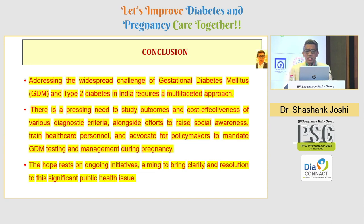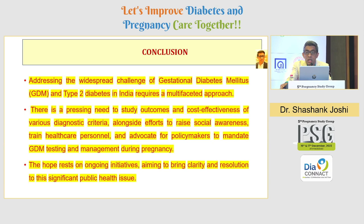We have to look at maternal diabetes, gestational diabetes, and type 2 diabetes with a multi-faceted approach. We need more outcomes data, cost-effectiveness analysis of diagnostic criteria, raised societal awareness, science built around it, and advocacy for policy makers to mandate testing. Unfortunately, central policies are state-dependent because execution happens at the state government level. All these initiatives need to be encouraged. I just wanted to incite some provocative and thought-stimulating science and public health thoughts through my dialogue and discussion. Thank you so much for the opportunity.